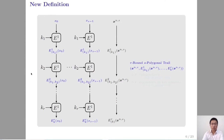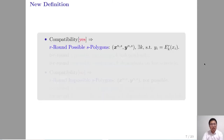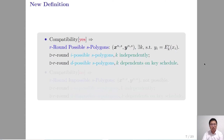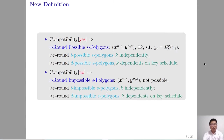Based on the definition of s-polygonal trail, we can define possible s-polygons and impossible s-polygons according to the compatibility of s-polygons. If two s-polygons are compatible, they are called possible s-polygons. If the round keys are chosen independently, they are called i-possible s-polygons. If the round keys are chosen according to the key schedule, they are called d-possible s-polygons. If two s-polygons are incompatible, they are called impossible s-polygons. If the round keys are chosen independently, they are called i-impossible s-polygons. If the round keys are chosen according to the key schedule, they are called d-impossible s-polygons.